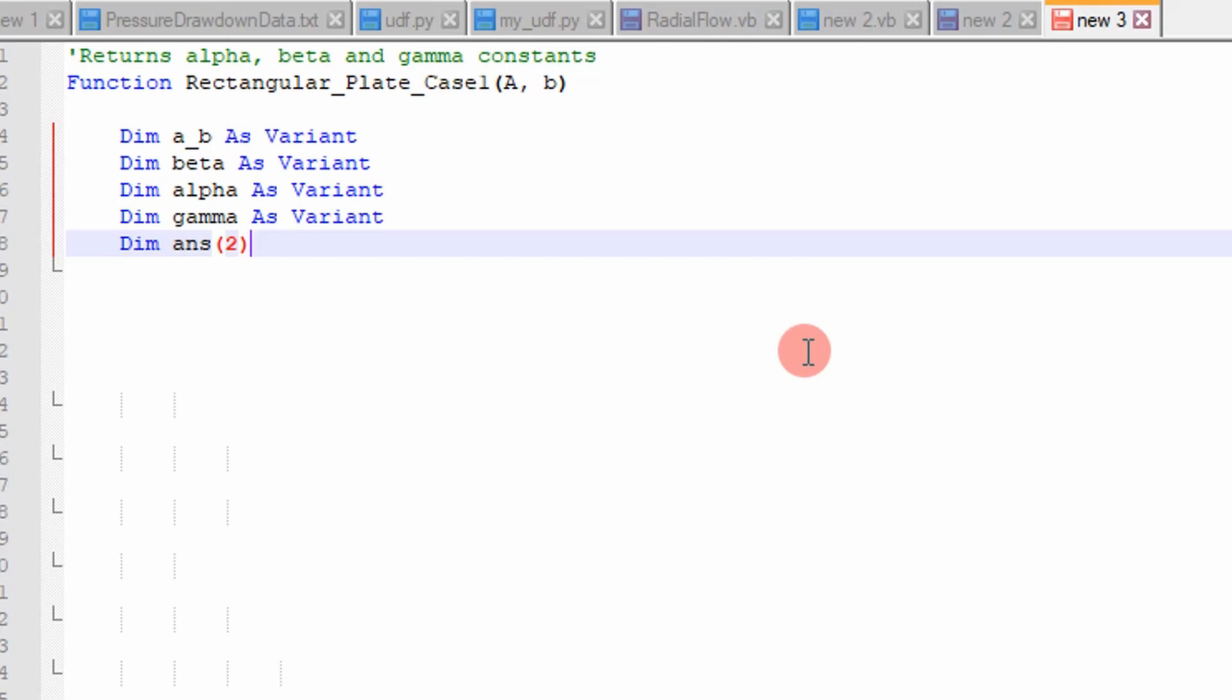In this case, I'm going to create our table or our list of values in the table. So we have basically four rows, our a divided by b, our beta, our alpha, our gamma. I'm declaring basically variants which can store anything. It can be an array or whatever for all of those variables. And then I am going to return alpha, beta, and gamma. So that's three values I'm going to return. So I declare an array of three values that stores three values.